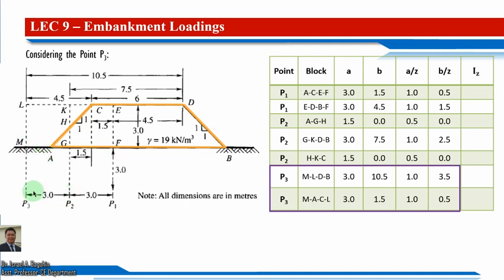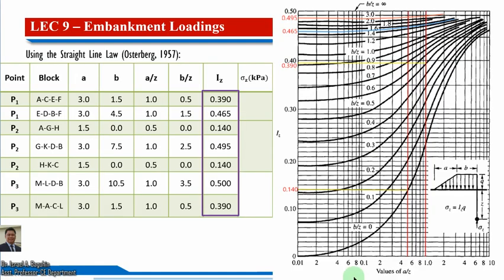Concluding the worked problem: the vertical stresses at P1, P2, and P3 are 48.7 kPa, 28.2 kPa, and 6.3 kPa respectively. We now proceed to the second topic: pressure isobars. By definition, an isobar is a line connecting all points of equal stress below the ground surface — it is essentially a stress contour.